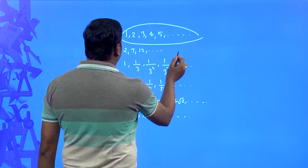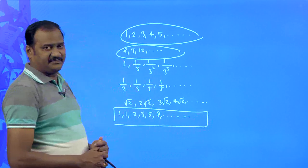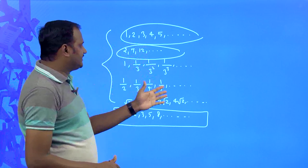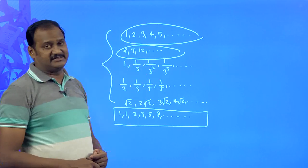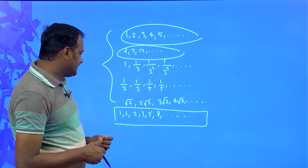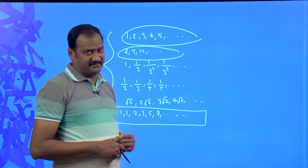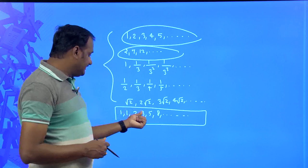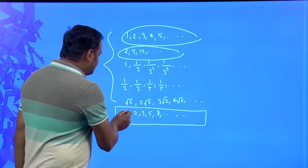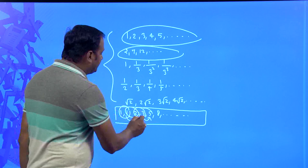Let me introduce arithmetic progression by taking several examples. There is one special sequence on the board that is entirely different from all the others. For the sequences 1, 2, 3, 4, 5 you can easily say the next number, but the sixth sequence — 1, 1, 2, 3, 5, 8 — is a little different. Here, 1+1=2, 1+2=3, 2+3=5, 3+5=8. So the next number is 8+5=13.